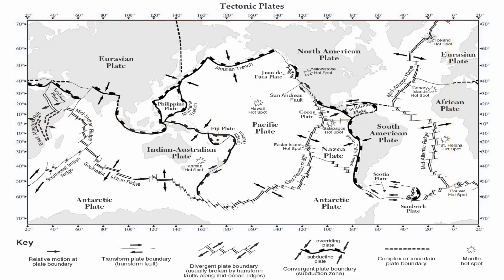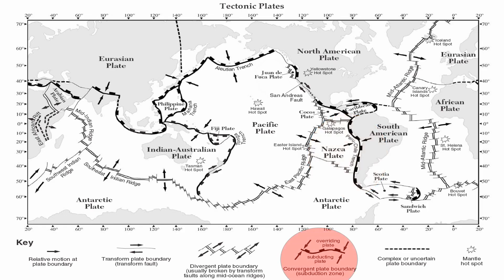Let's start with our convergent plate boundaries. Ocean-to-continent convergence takes place in the Pacific Northwest at the Juan de Fuca plate and North American plate. The Juan de Fuca plate is going to subduct underneath North America. The Cocos plate is going to subduct underneath North America and even the Caribbean plate there as well. The Nazca plate subducts underneath South America. In these locations you have subduction, volcanoes, earthquakes, mountains, and trenches. If you get mixed up, take a look at the map key at the bottom, which tells you the symbol between the overriding plate and the subducting plate.